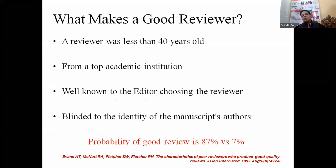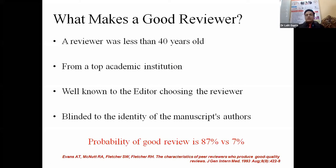What makes a good reviewer? The reviewer who is less than 40 years old is very enthusiastic and always goes for new things, while senior people have a lot to do in the research process and have little time for review. From top academic institutions is very important. A person well known to the editor knows their field of interest and strength, and can review the paper much better. Being blinded to the identity of manuscript authors is also very important. With all these criteria, the probability of a good review by a new reviewer is 87% versus 7% when the reviewer is unknown or inexperienced.